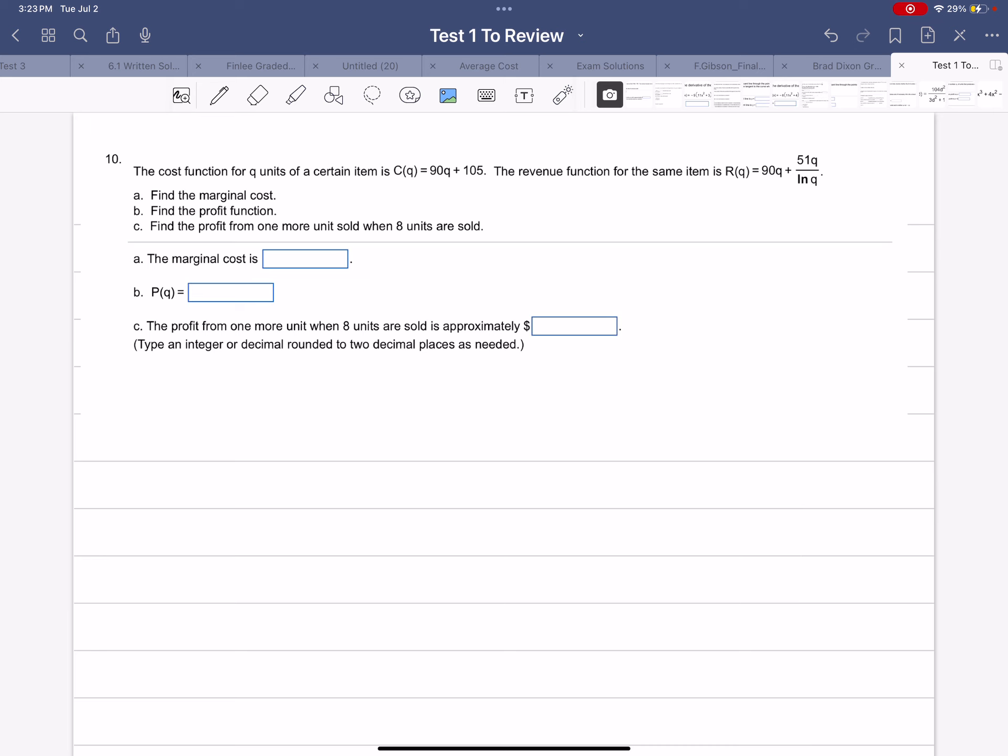So the marginal cost is just C'(Q). C'(Q) is 90. The marginal cost is not changing. It's a constant of 90.